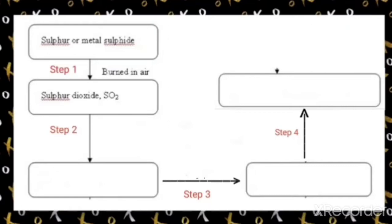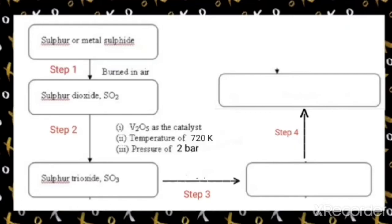In step 2, the sulfur dioxide formed in step 1 is further oxidized to form sulfur trioxide. This reaction is reversible as well as exothermic in nature — it is the key reaction of this process. It takes place in the presence of catalyst V₂O₅ at a temperature of 720 Kelvin and pressure of 2 bar.